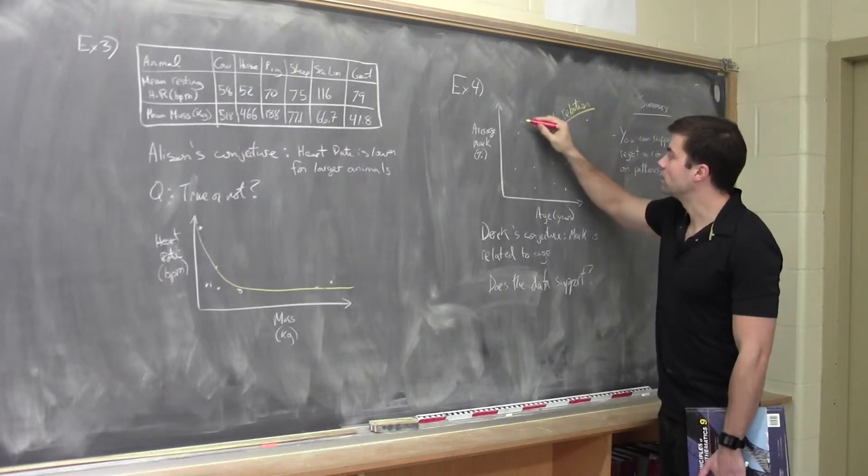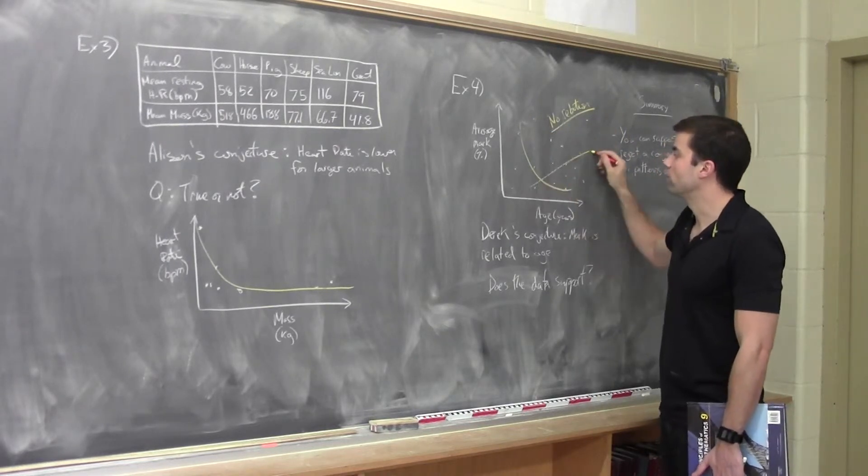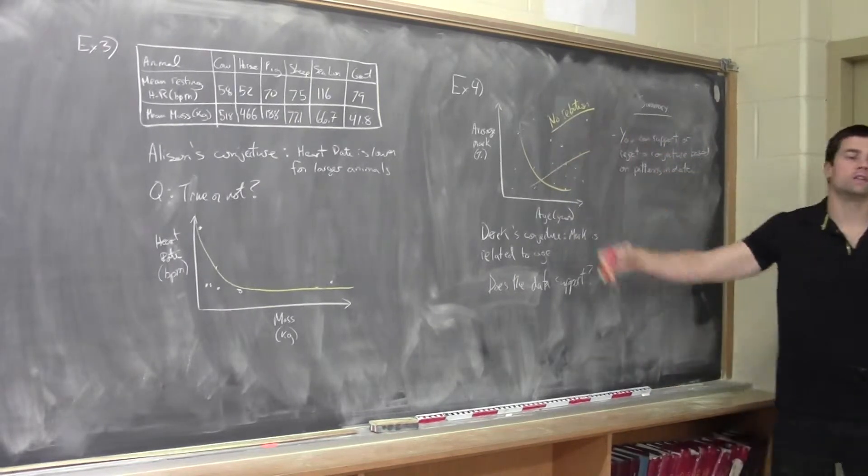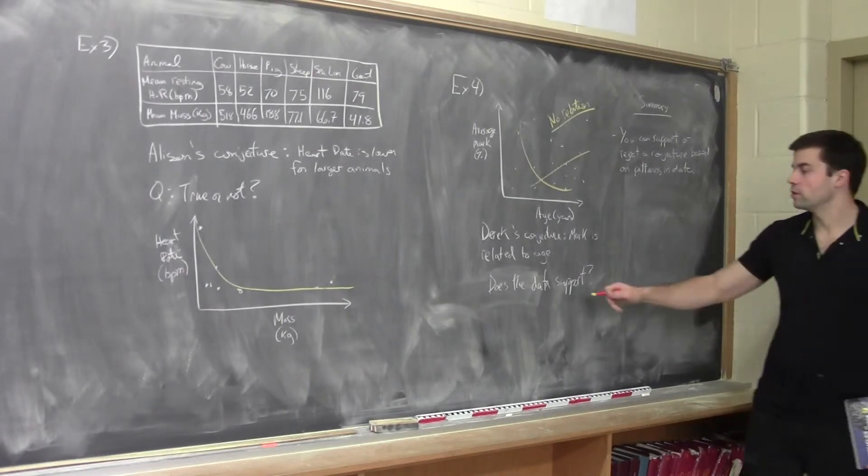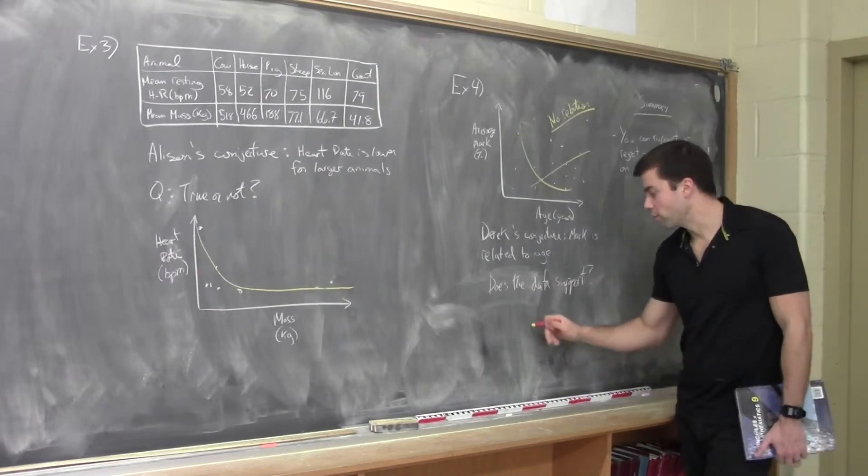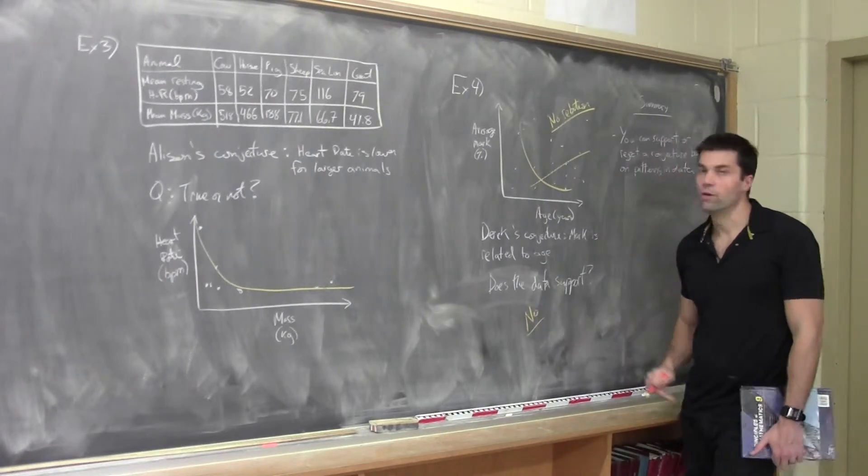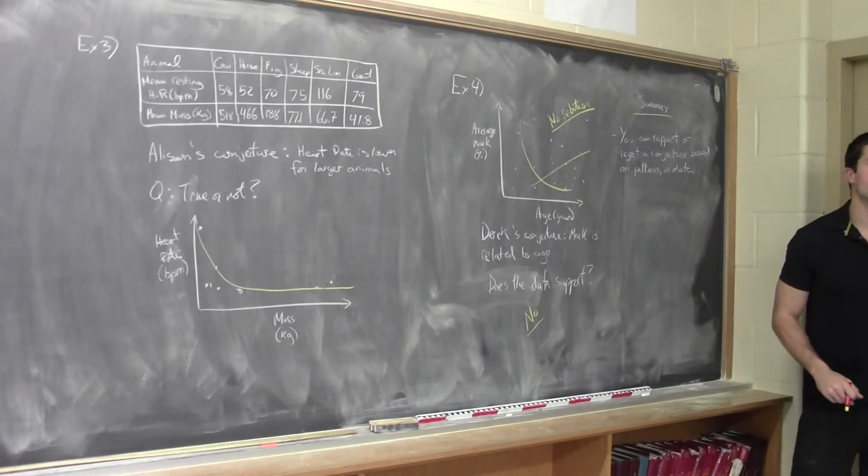Okay, and the reason why is because you can't draw any sort of curve or line of best fit, because the data is just scattered all over the place. All right, so in this particular example, does the data support, the answer again would be no. It does not support this conjecture.